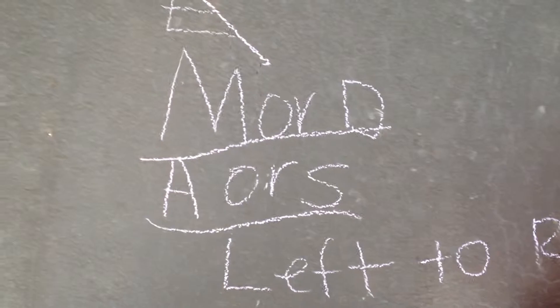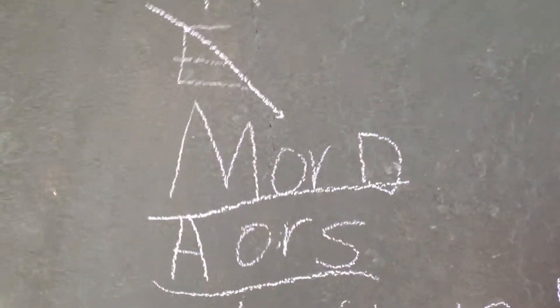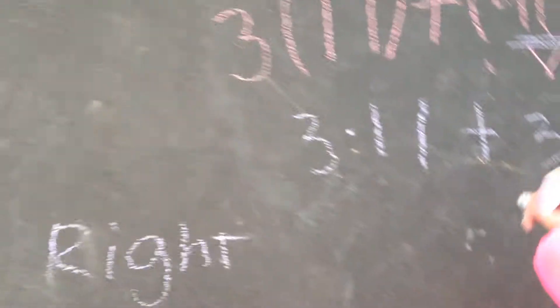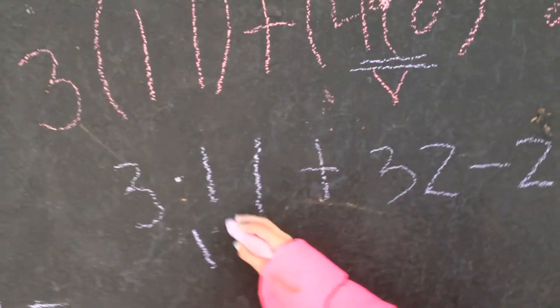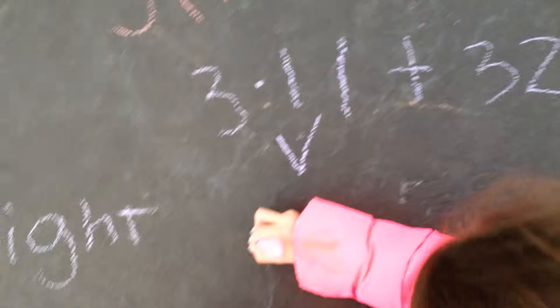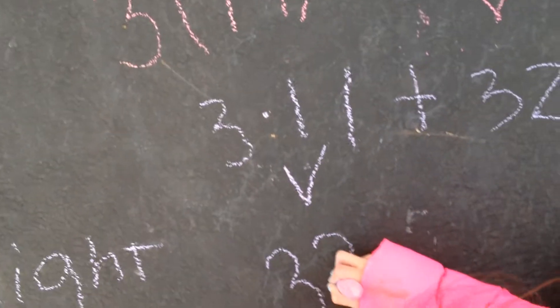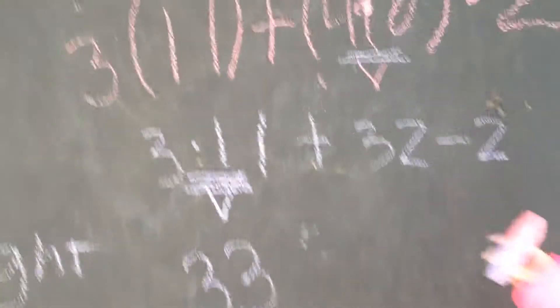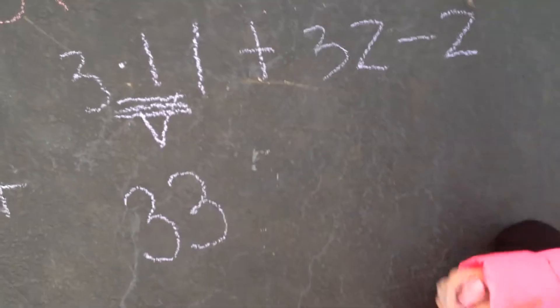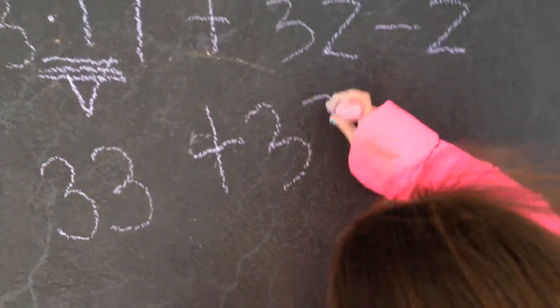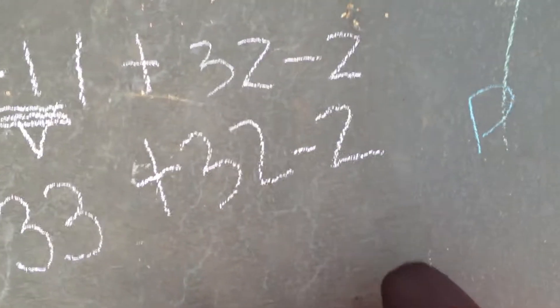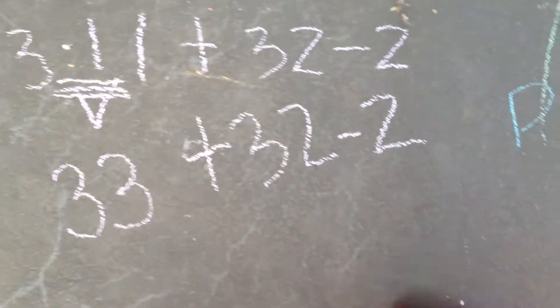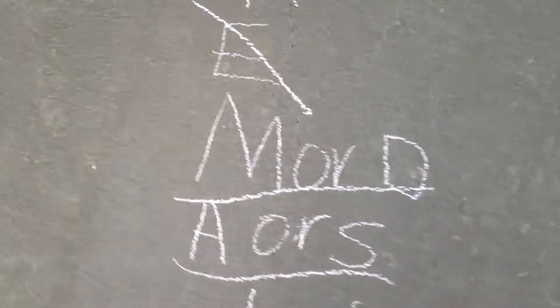Next we have M or D, which stands for multiplication or division. Since there are two, you're going to come down to your rule: left to right. So we look for multiplication or division left to right. The first thing we see is 3 times 11, and we're going to do 3 lines under that since it's the third step. The answer is 33. We rewrite the rest of the problem. We have no more multiplication or division, so we cross that off the list.